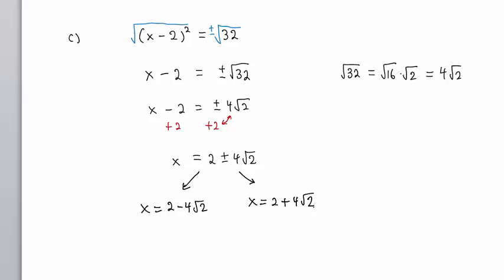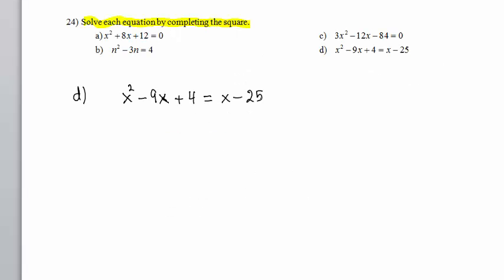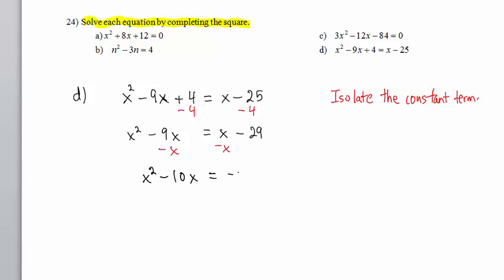Now, let's go on to part D. As I did in part C, I'm going to stick with my opening move, which is to isolate the constant term. I will subtract 4 from both sides. x squared minus 9x equals x minus 29. I also need to push the x term over to the left by subtracting. We have x squared minus 10x equals negative 29.